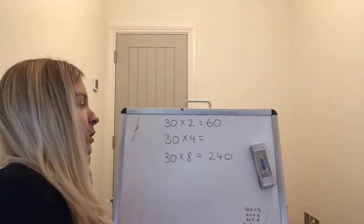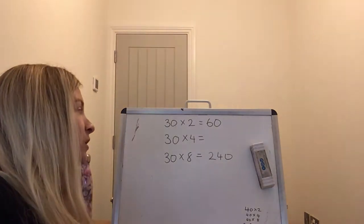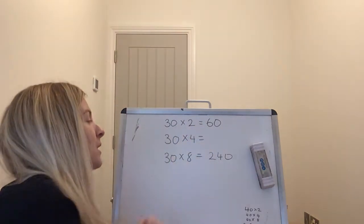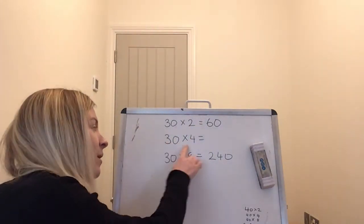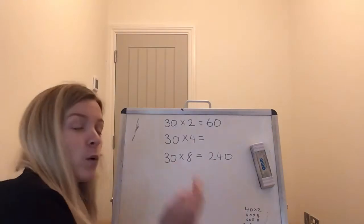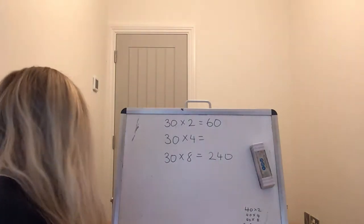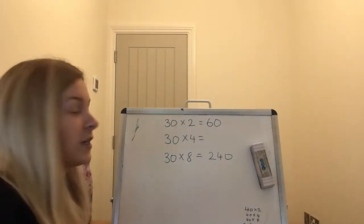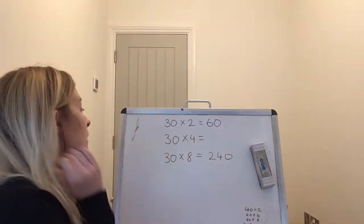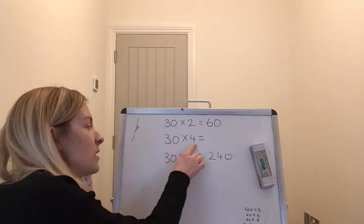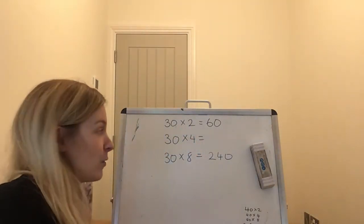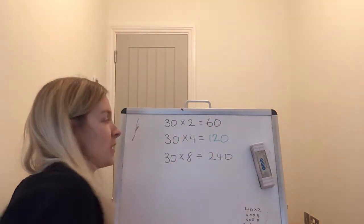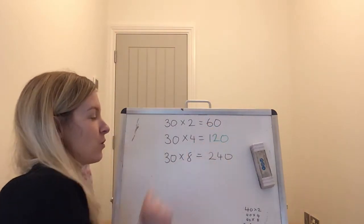To begin with you have a few questions that look like this. I'm telling you that 30 lots of 2 is 60. I'm leaving a gap, 30 lots of 4, but I'm also going to tell you that 30 lots of 8 is 240. So it's your job to fill in this blank spot here. If you know what 30 lots of 2 is, 30 lots of 4 must be double. So double 60 is 120. Double 6 is 12, double 60 is 120.